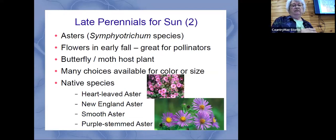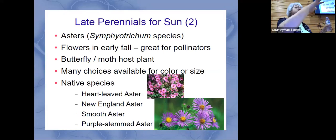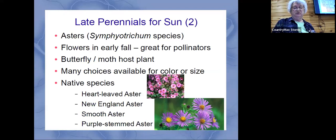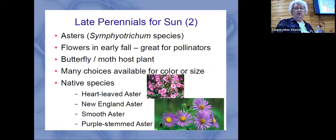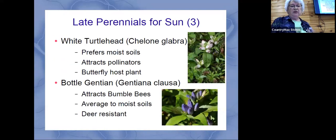Another late-flowering group for sun is the asters, which are really very pretty. I had some and my asters came up and just stayed in bloom for weeks. They're very nice to include in your garden. There are several different native asters — not all are plain blue, though purplish blue is the most common. There are different colored ones available. Here are some other interesting sun plants too.